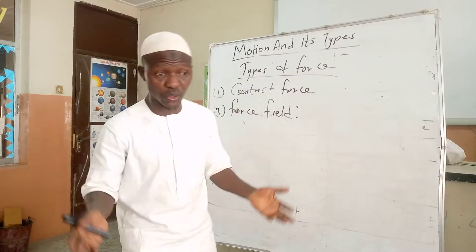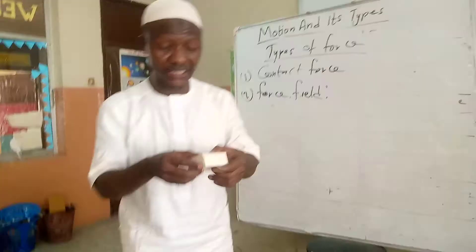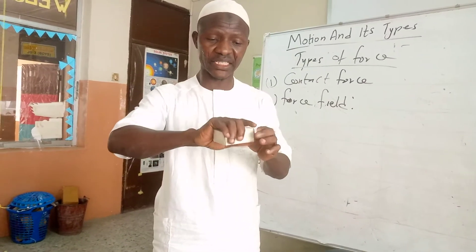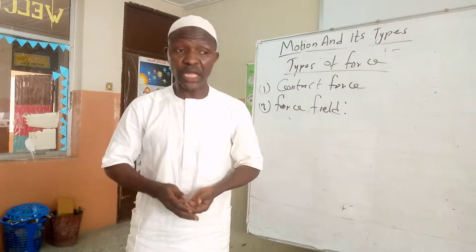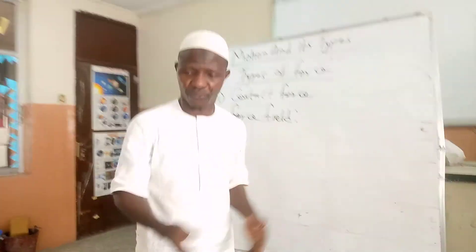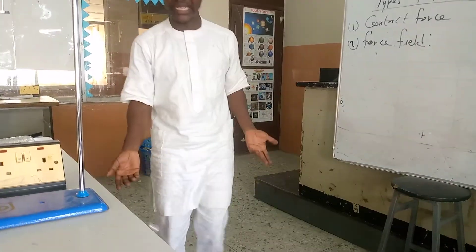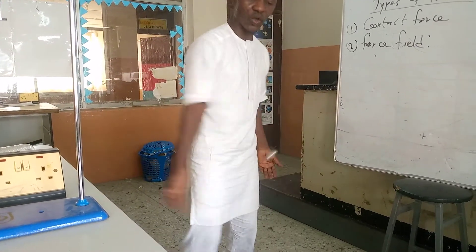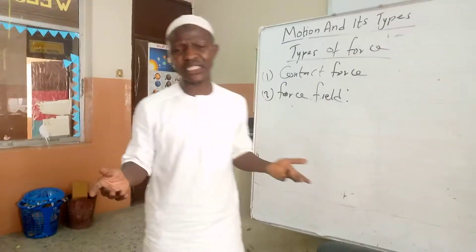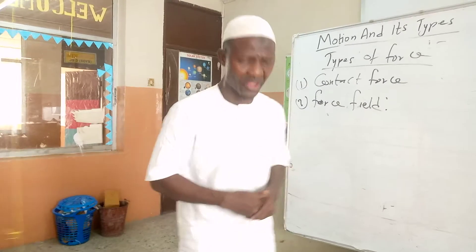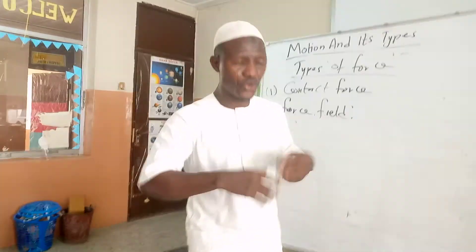These forces have effects on objects. Force can change the shape of an object — for example, pressing a material deforms it. Force can make an object move. Force can change the direction of movement of an object. Force can also stop an object from moving. So the effects of force on an object are: it can make it move, change its direction, stop its motion, and change its shape.